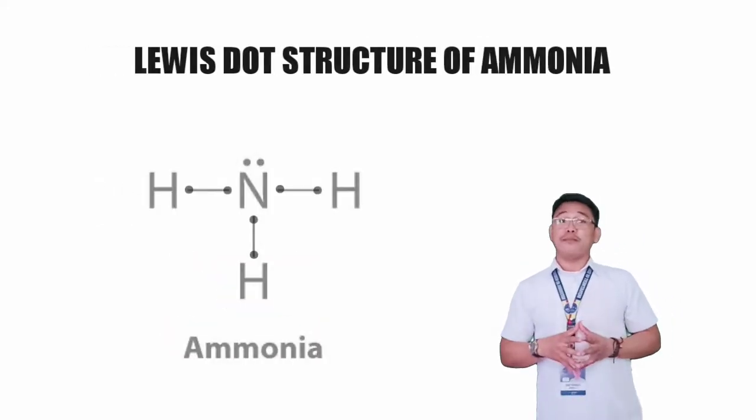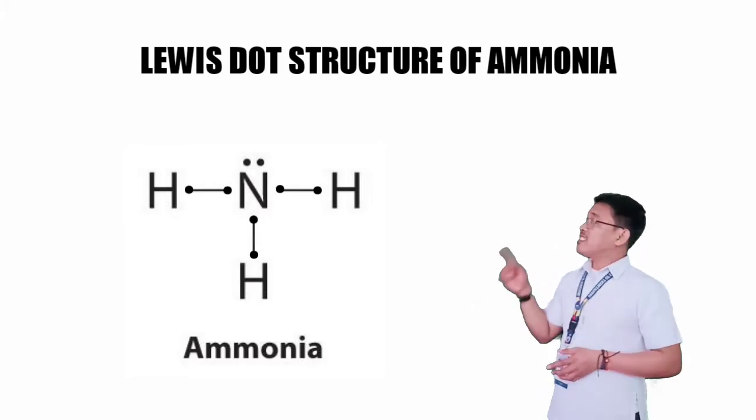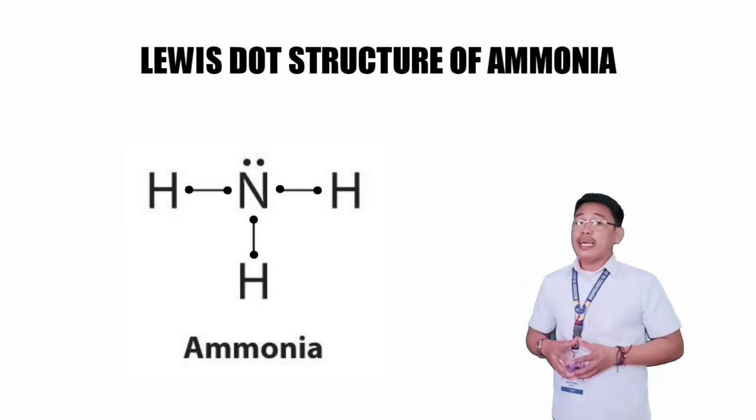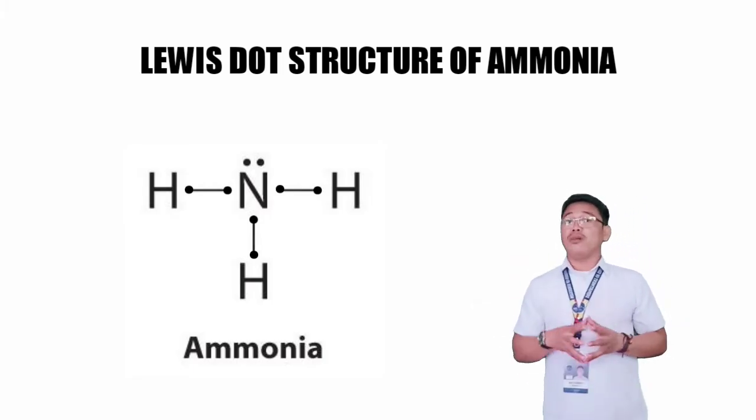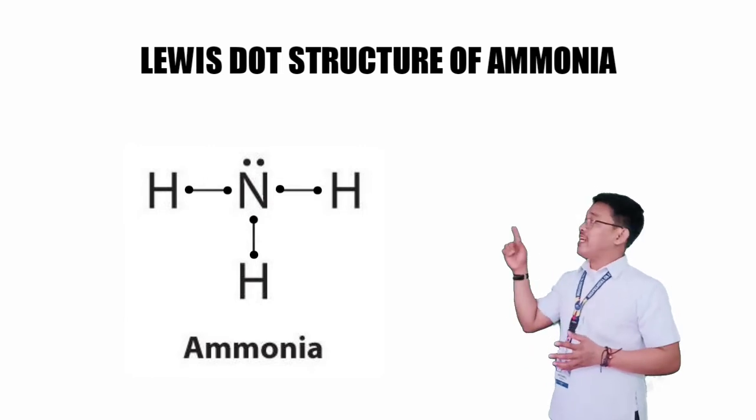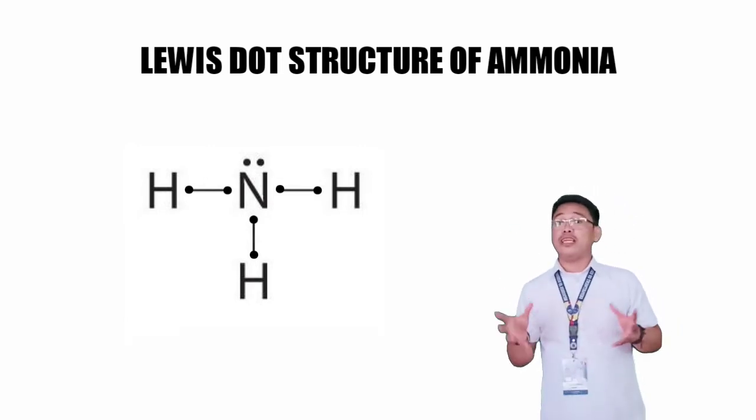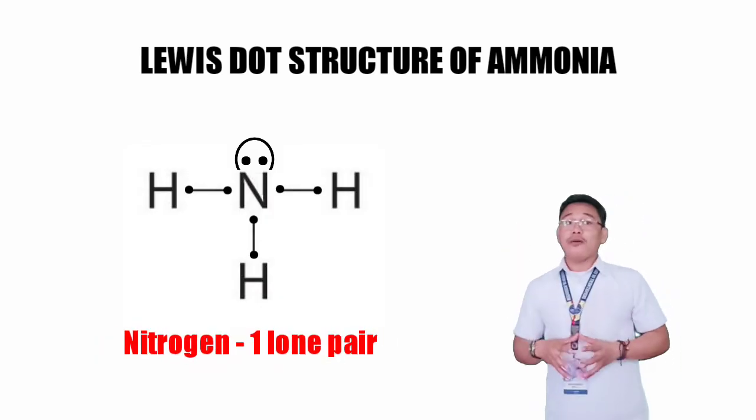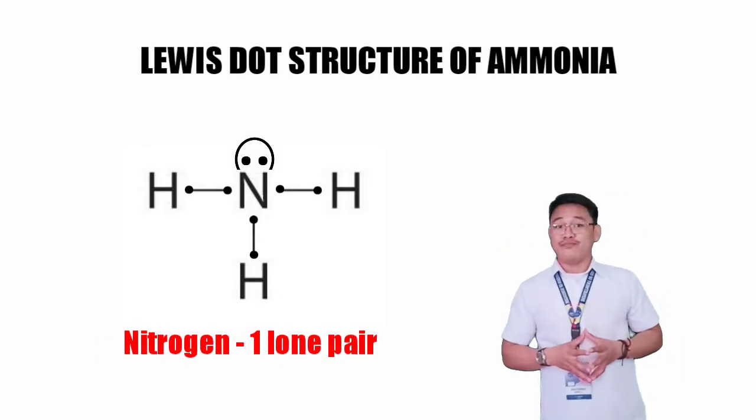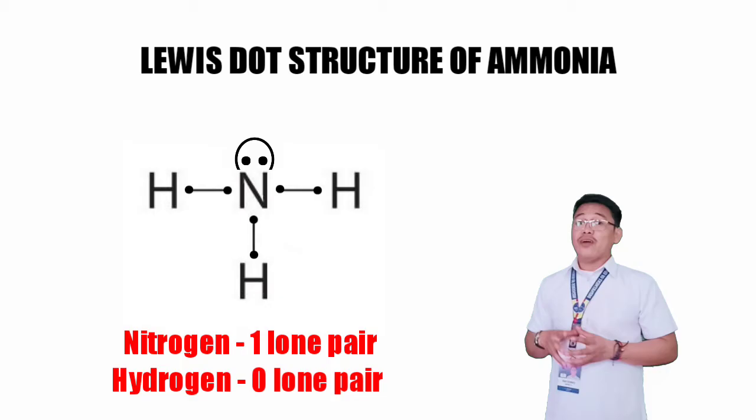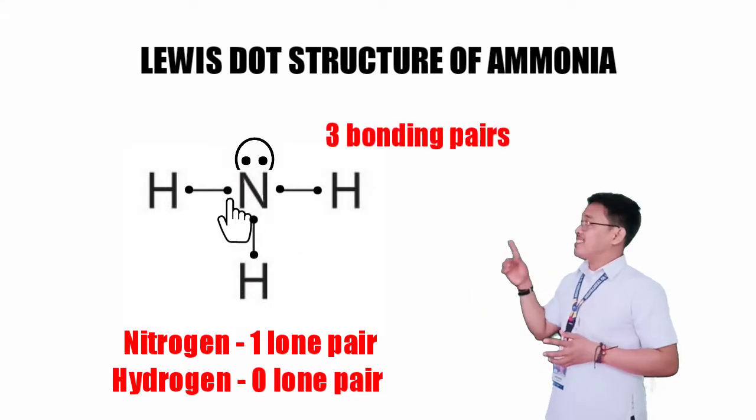Another example is ammonia. Nitrogen has five valence electrons. In the Lewis structure of ammonia molecule, it shows that nitrogen as the central atom has how many lone pairs? Yes, one. How about the bonding hydrogen atom? It has none. Now, there are three bonding pairs as shown.